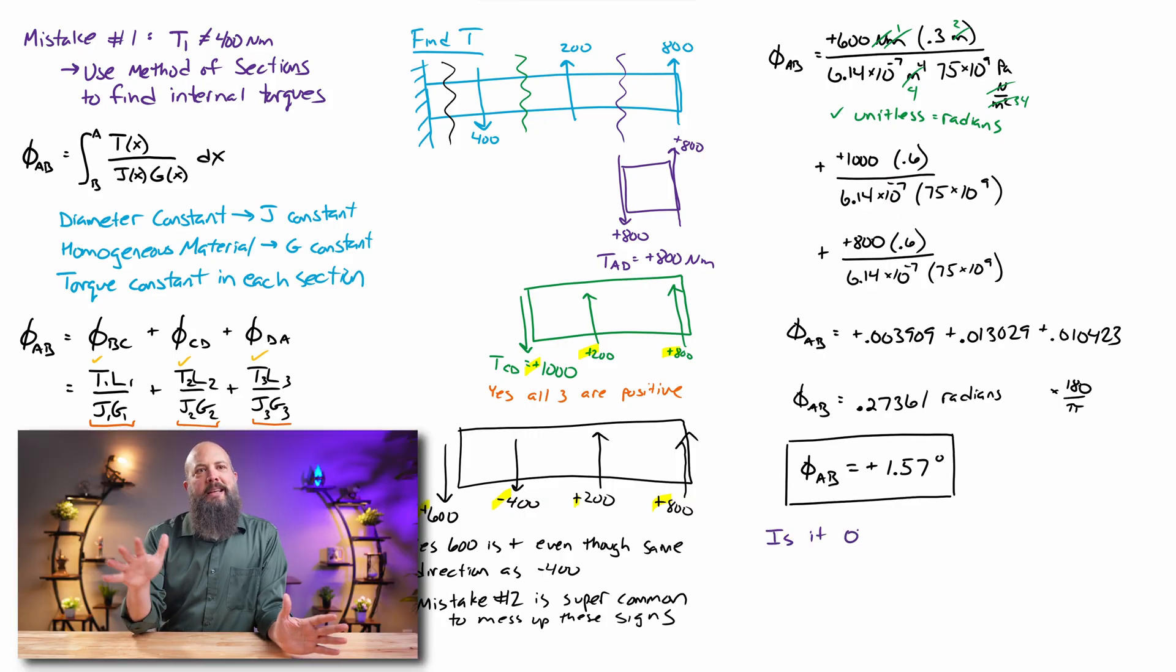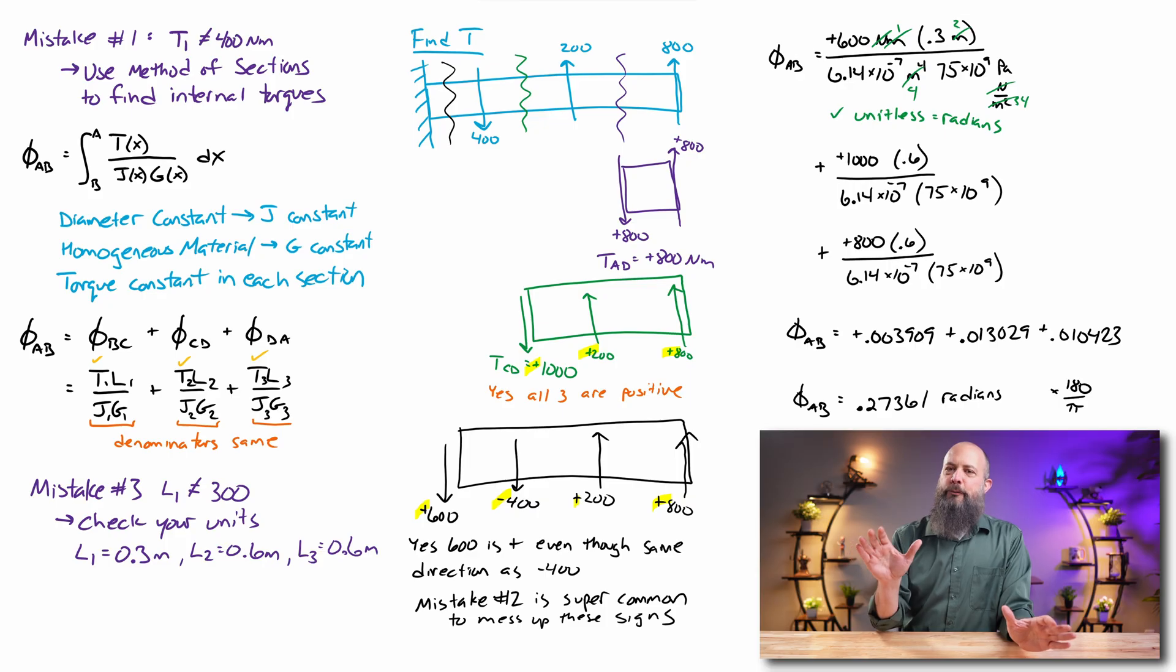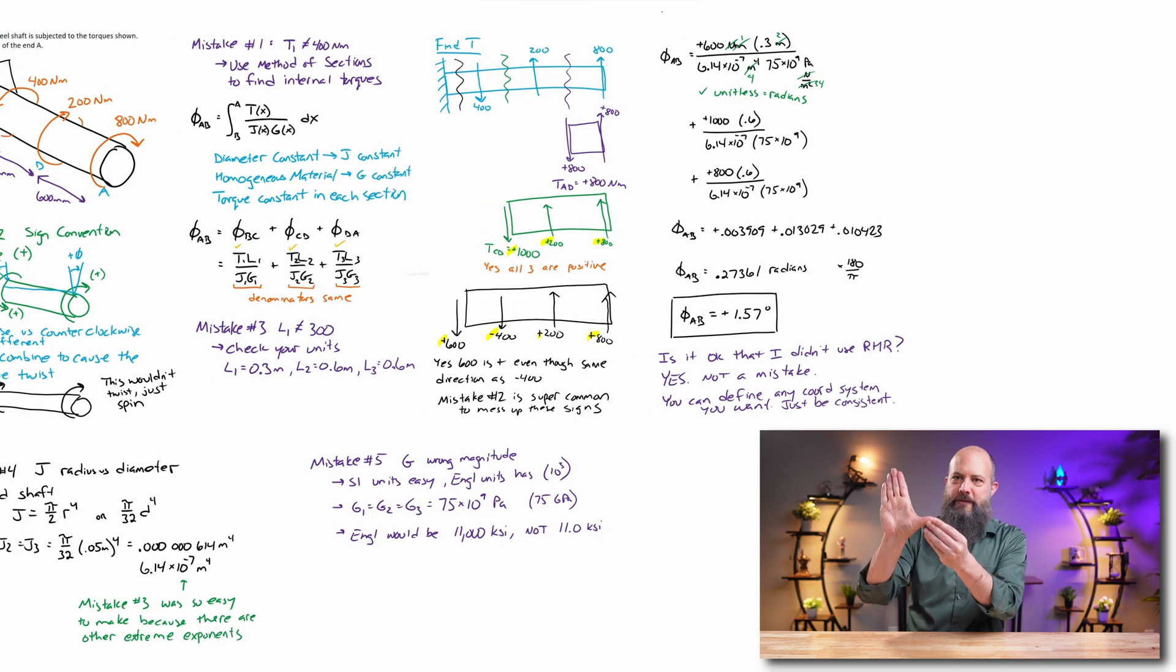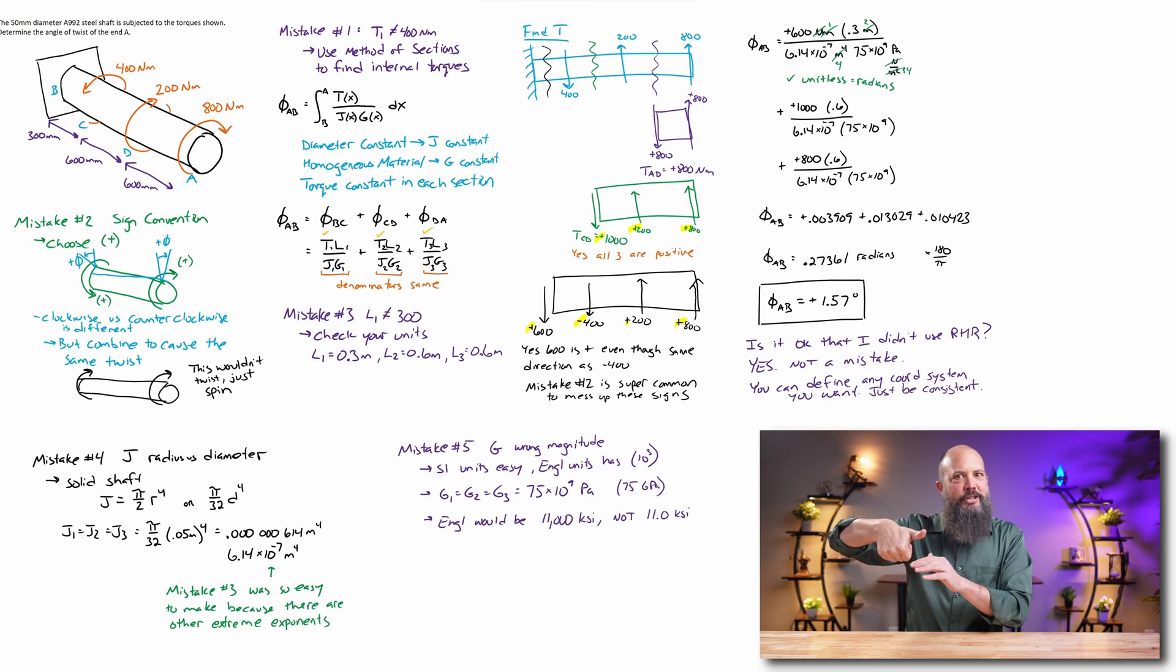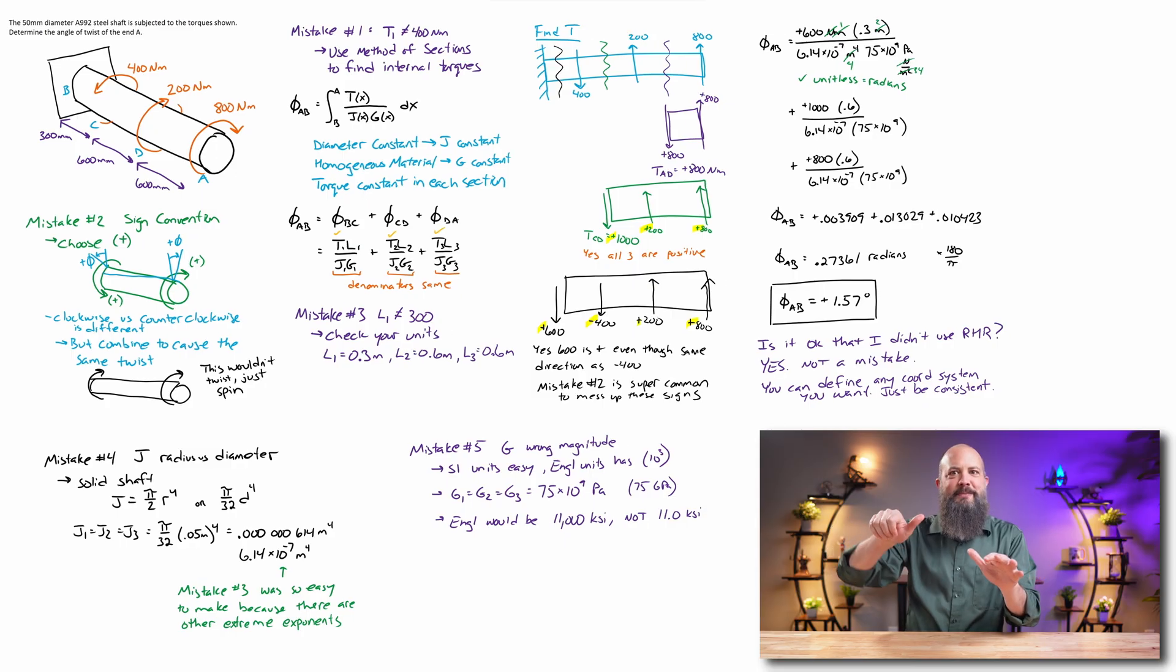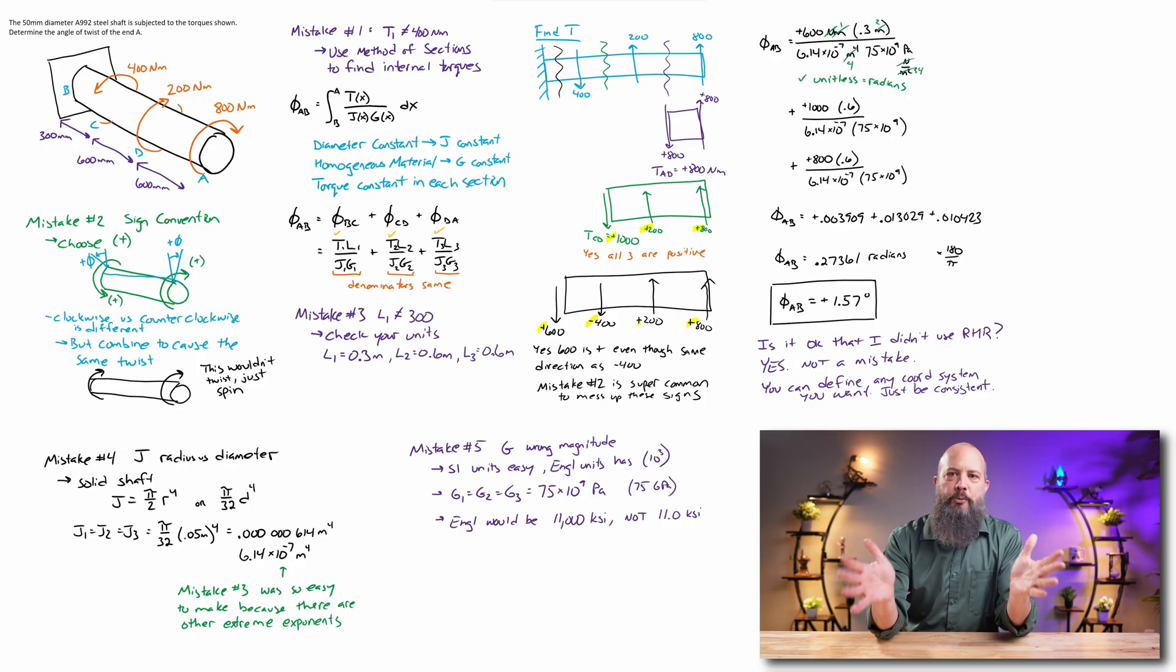And now, you might be asking, that sign convention I chose at the very beginning, it did not actually follow the right-hand rule, right? If we're following the right-hand rule where, like, your thumb is the direction of the shaft and your fingers curl in the direction of positive, that's actually opposite, right? I did, that's the negative direction that I chose at the beginning. That's not a mistake. You can define whatever coordinate system you want for a problem, as long as you follow it meticulously and actually use it throughout the entire problem.